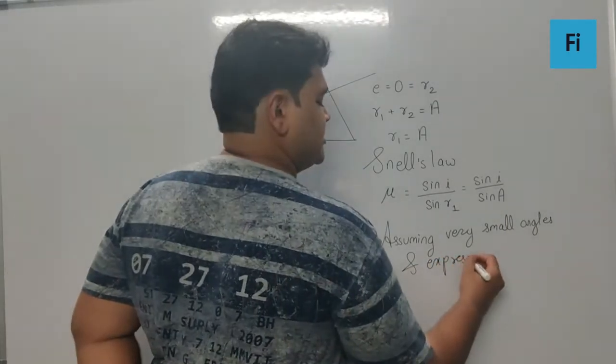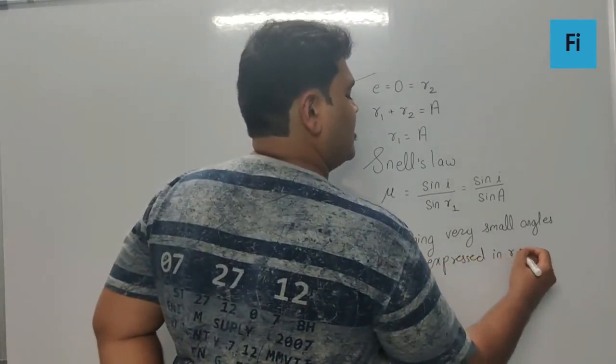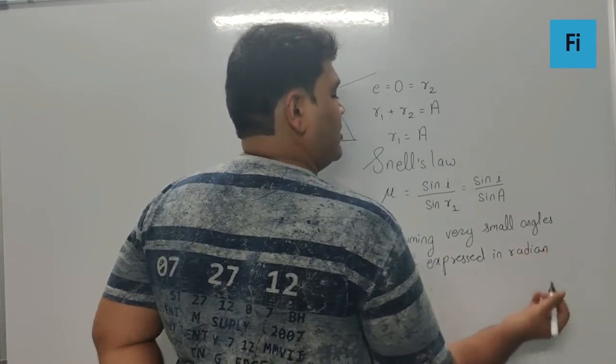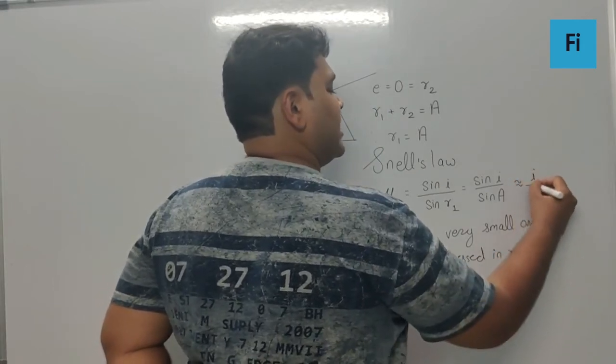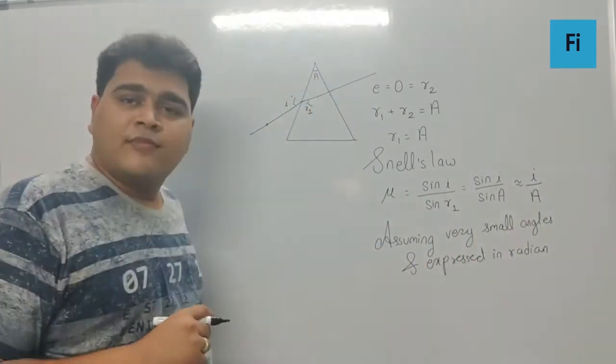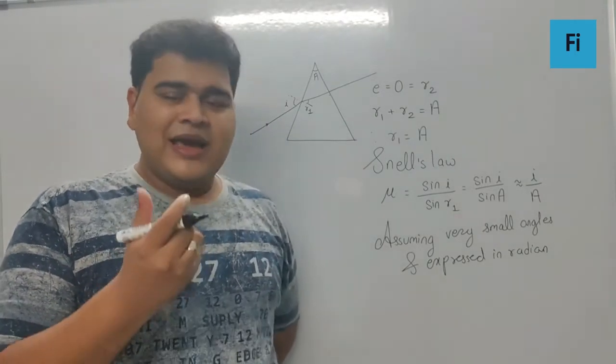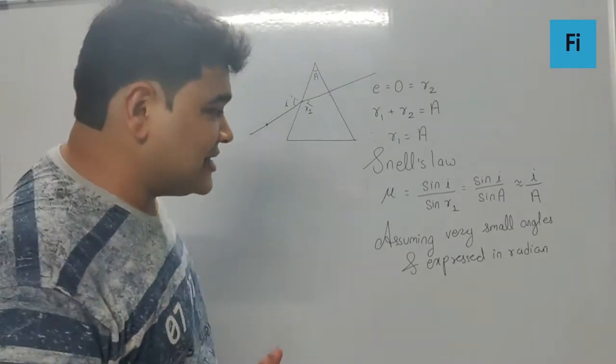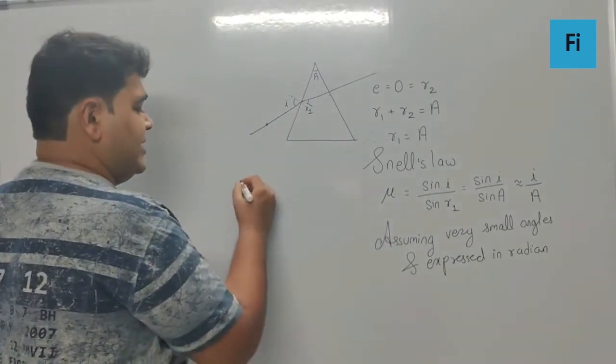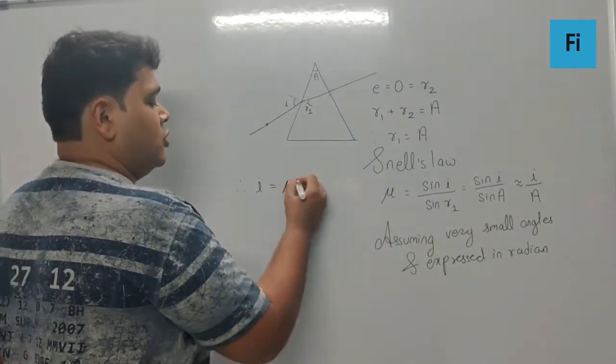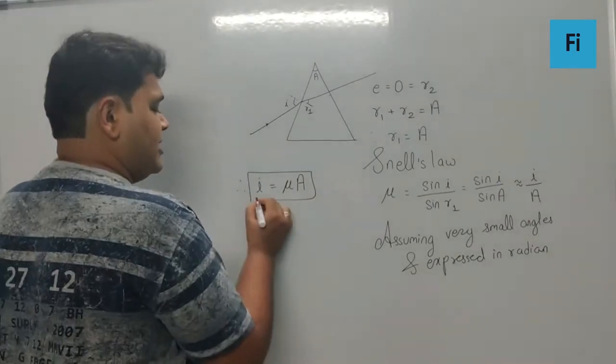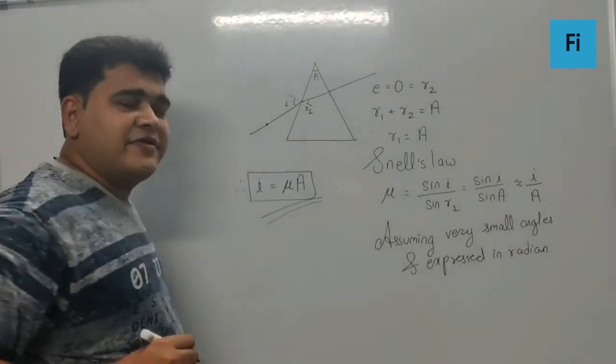And expressed in radian, we can take this as i by A. So the sine of theta is equivalent to theta, provided the angle is very small and expressed in radian. Now in that scenario, I can definitely write that means i is equal to μ times A, and that is our final answer.